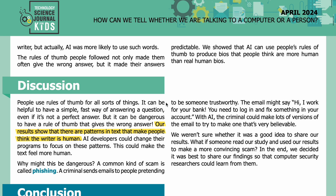Discussion: People use rules of thumb for all sorts of things. It can be helpful to have a simple, fast way of answering a question, even if it's not a perfect answer. But it can be dangerous to have a rule of thumb that gives the wrong answer. Our results show that there are patterns in text that make people think the writer is human.